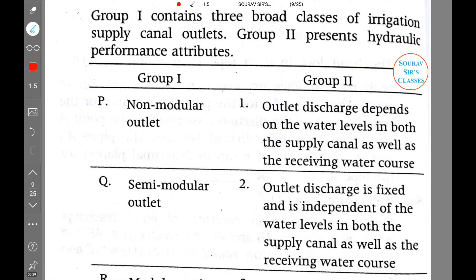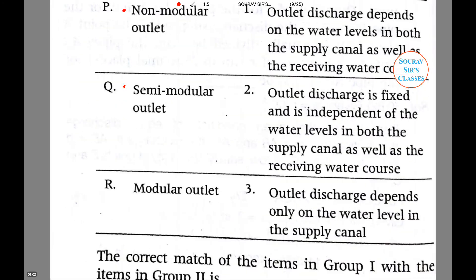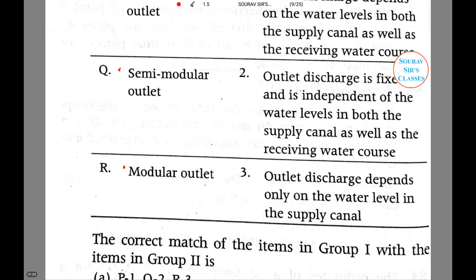Now let us look at the question we will be dealing with today. The question reads: Group I contains three broad classes of irrigation supply canal outlets, and Group II presents hydraulic performance attributes. Group I consists of non-modular outlet, semi-modular outlet, and modular outlet. We have to match the two columns.